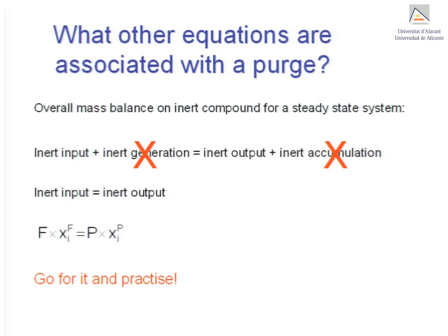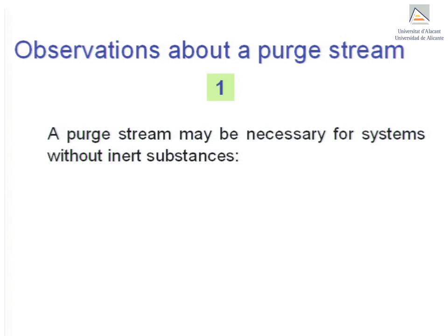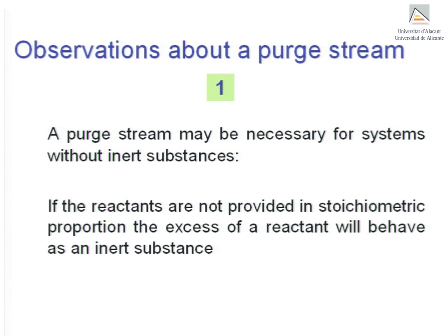Finally, we make some observations to help students avoid common confusions regarding purge streams. First observation: a purge stream may also be necessary in systems without inert substances. Students tend to think that without inert substances a purge stream becomes unnecessary. There are, however, situations in which the reactants are not supplied in stoichiometric proportion. In these situations, an excess of a given reactant with respect to stoichiometry will behave as if it were an inert substance.